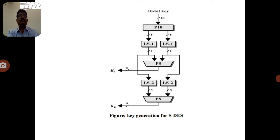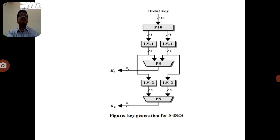The transposition technique is nothing but each element in the plain text being rearranged. The element can be rearranged in a different manner — the position is changed, which is simply called a permutation. The order of elements is changed — that is the transposition technique.